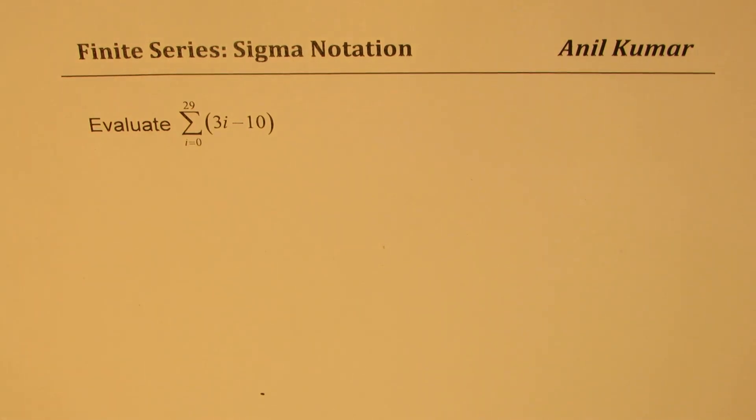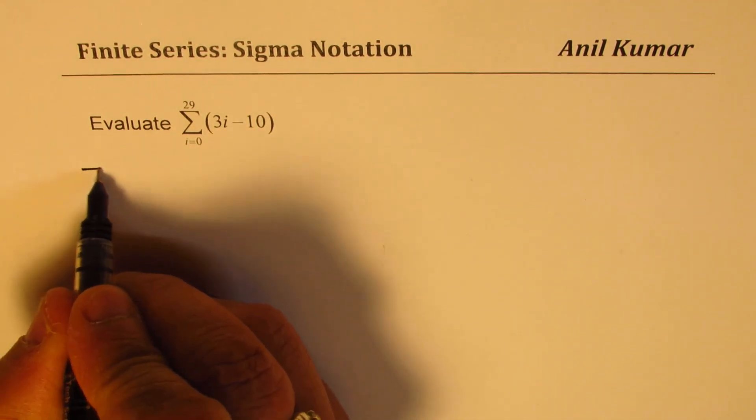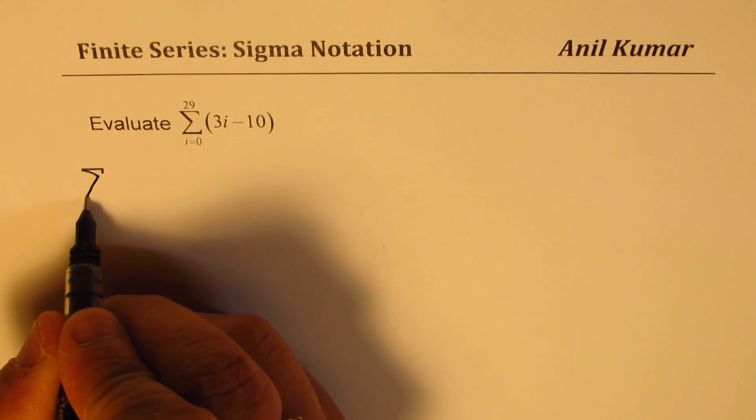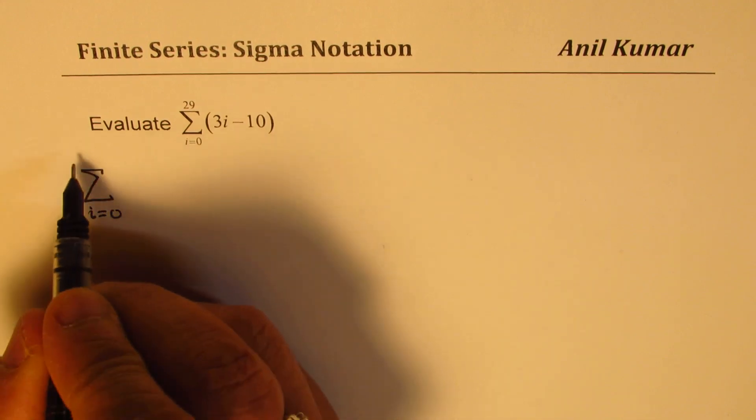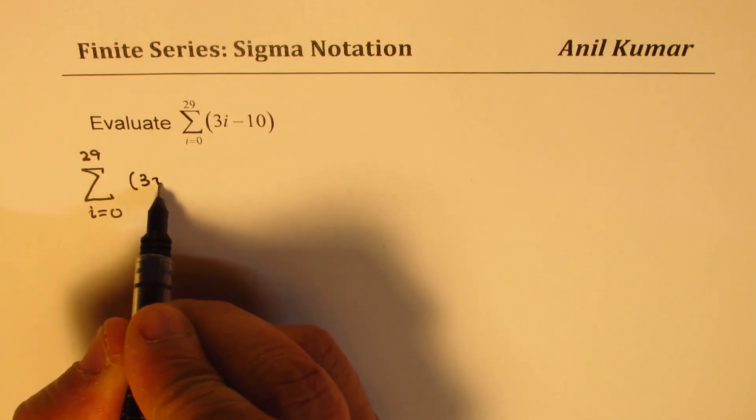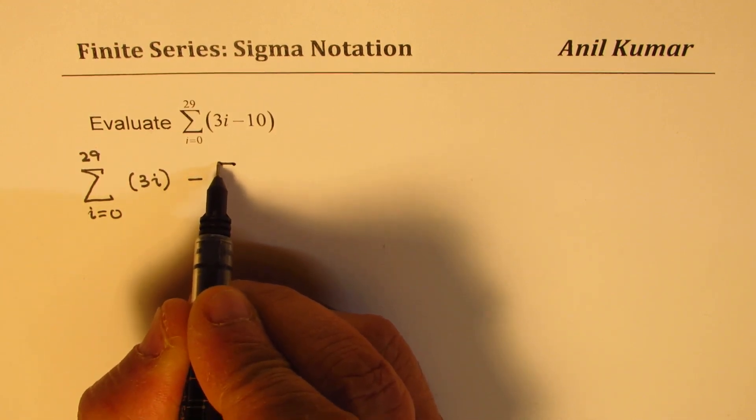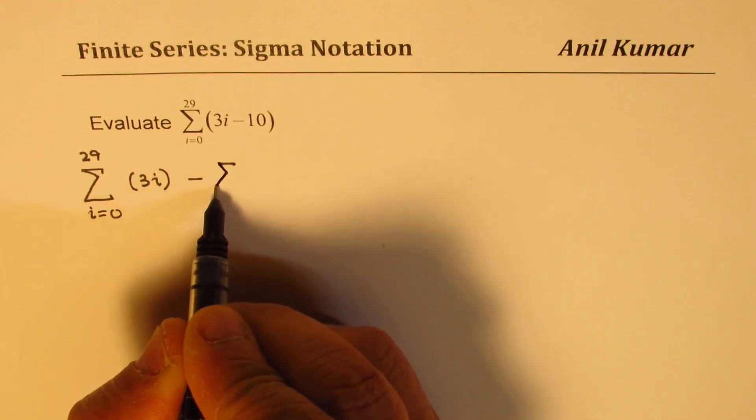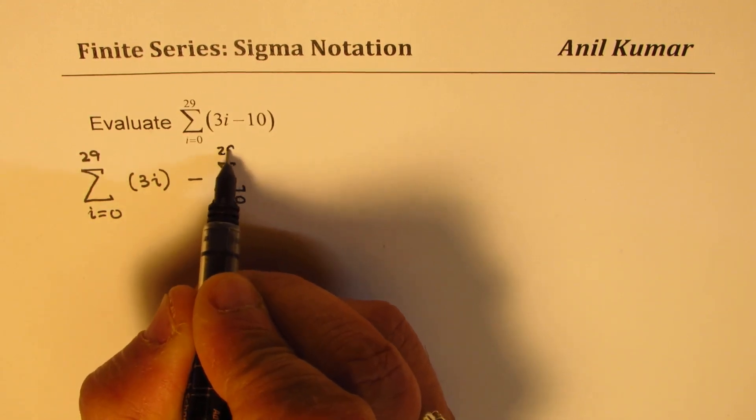It basically has two components in it. Let's look into these two components. The sum of the series, the sigma sign means sum, of i equals from 0 to 29. We have two terms. One is 3 times i, and the other term is minus 10. So I have written minus outside, and then the other term is from 0 to 29, 10.